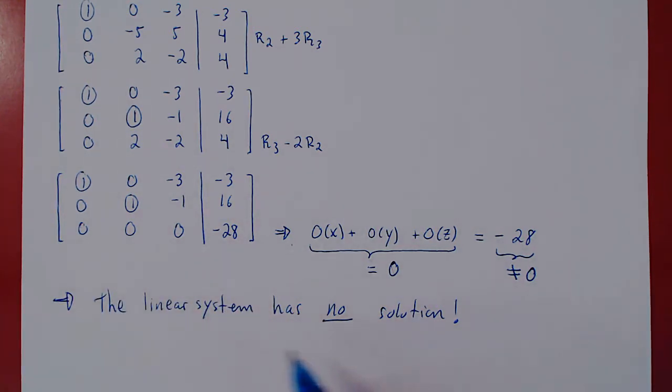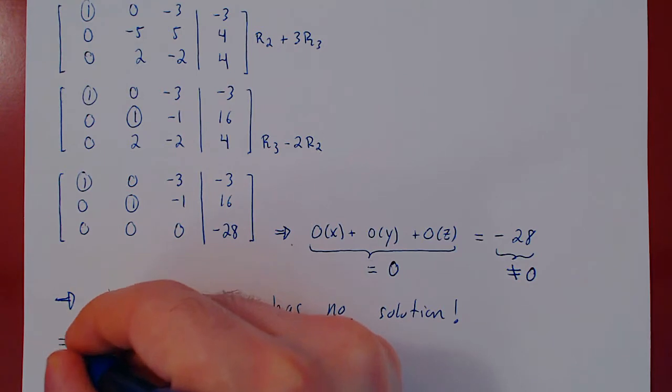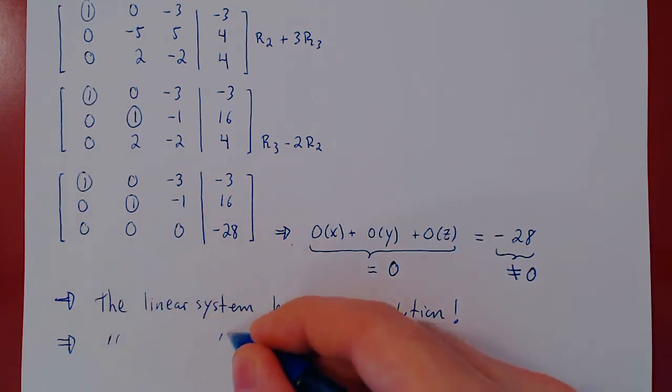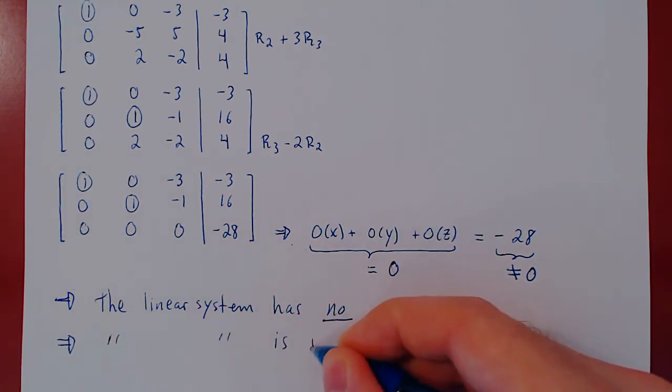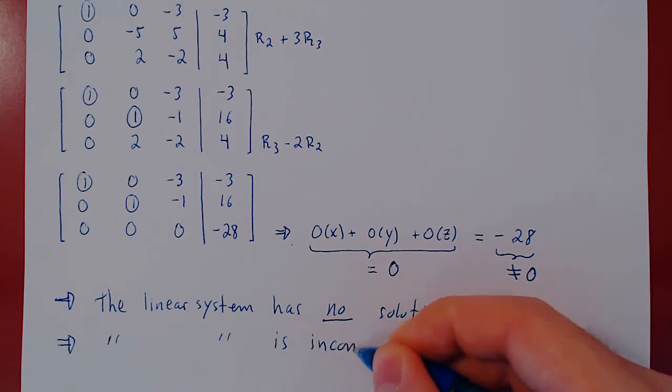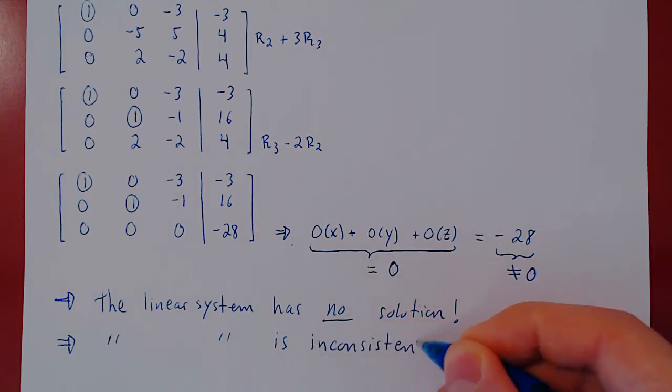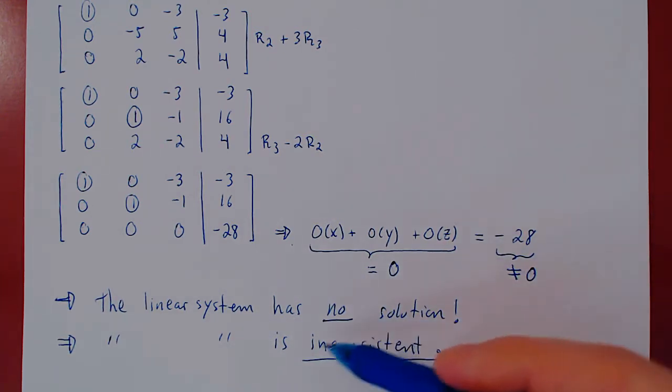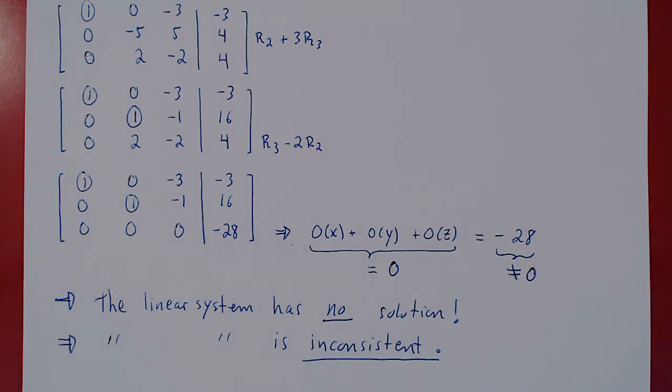Now, there is a technical term for a system that has no solution, and the term is inconsistent. So we said the linear system is inconsistent. Same thing as no solution. So if you ever say a system is consistent, then there is at least one solution. If we say the system is inconsistent, then there is no solution.